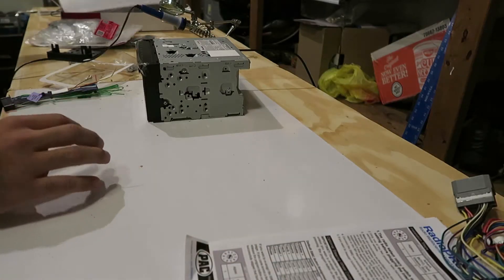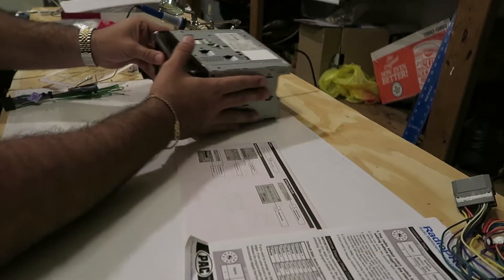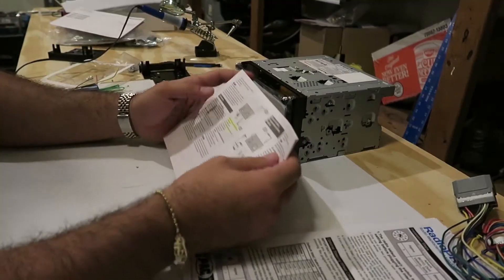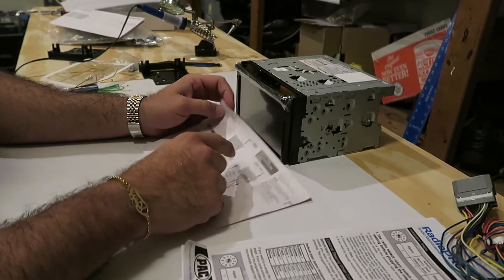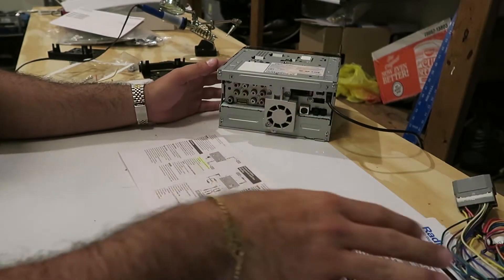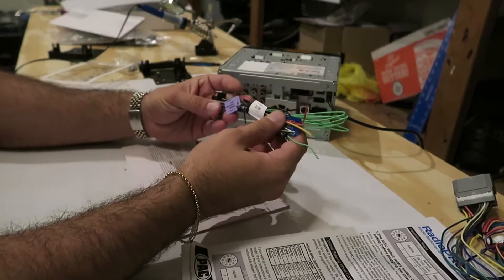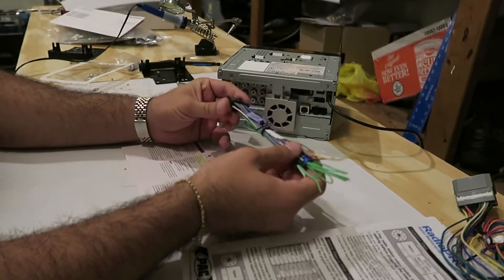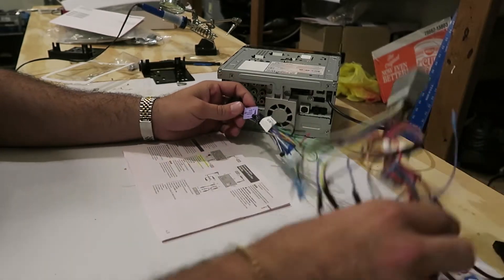You also need the manual that came provided with your receiver. On this manual it's going to tell you exactly how to connect all the wires from the cable set that they had provided with your receiver to this new interface.